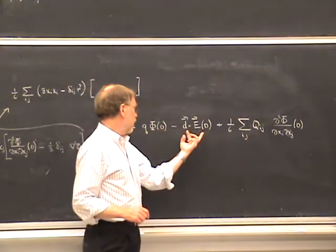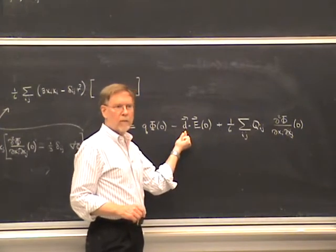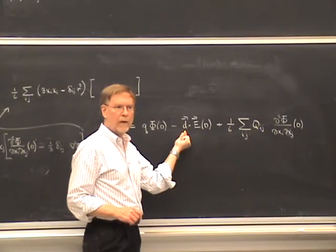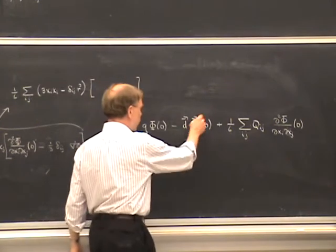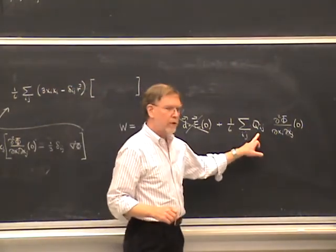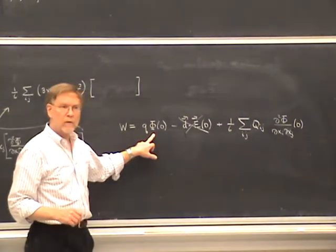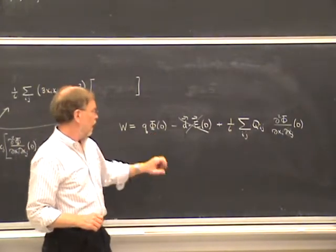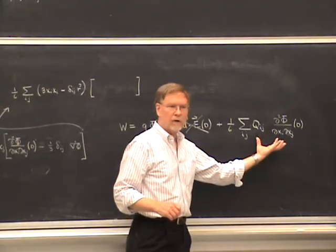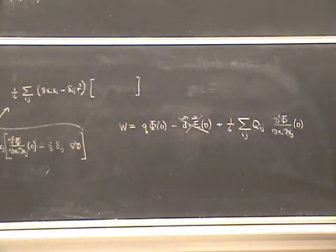It can be shown that the dipole moment of the nucleus vanishes — this comes from conservation of parity and time reversal, which we'll talk about later. As a result, the dipole term disappears, and the quadrupole term is the first non-vanishing correction to the interaction. This gives rise to additional contributions to what's called the hyperfine structure of the atomic spectrum, which I'll say more about later.